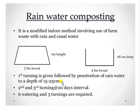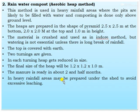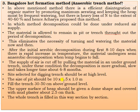This is a modified Indore method involving the use of farm channels with rainwater and canal water. The channel is about 2.5 meters broad, 1 meter in height, 60 cm deep, and 4.5 meters broad. The first turning is given after penetration of rainwater to a depth of 15 to 25 cm. The second and third turnings are at 20-day intervals. Six waterings and three turnings are required for rainwater composting.